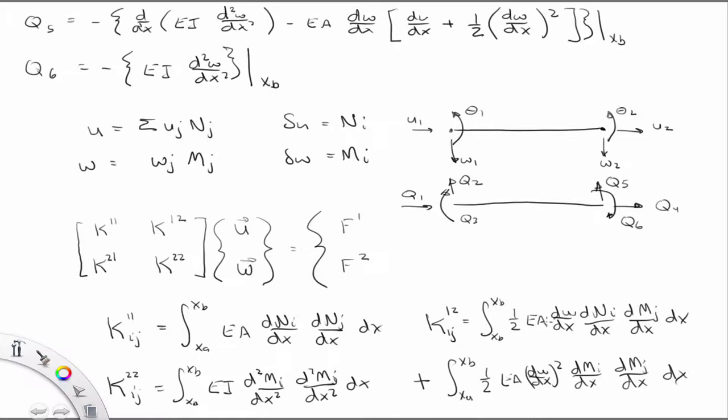But now, we have this thing. So we actually have a function of what we're solving for in the stiffness matrix. We're solving for W. That's one of the things we're solving for, right?